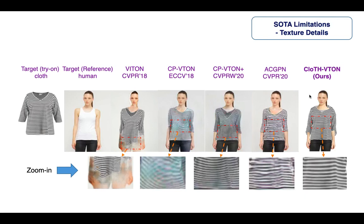This is mainly due to the image features passing through the neural network layers, where they get downscaled and then upscaled. However, our method, Cloth Vuitton, can preserve the highest quality textures.